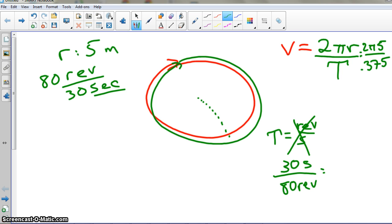And so someone with a calculator, what's 10 pi divided by 0.375? 83.78, so about 84 meters per second.